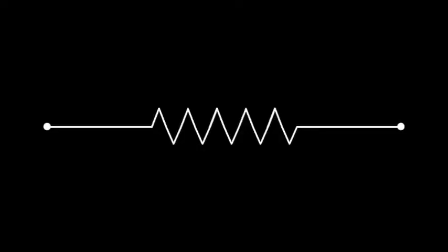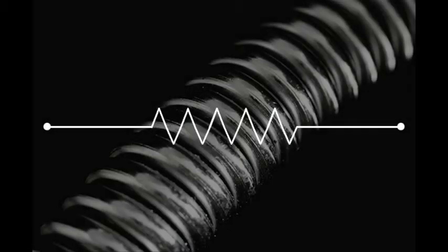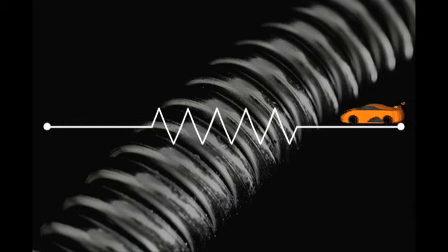The schematic symbol for a resistor looks like this. This drawing represents early forms of resistors that were made from a coiled wire. Resistance, in this instance, is caused by the increased distance between A and B.